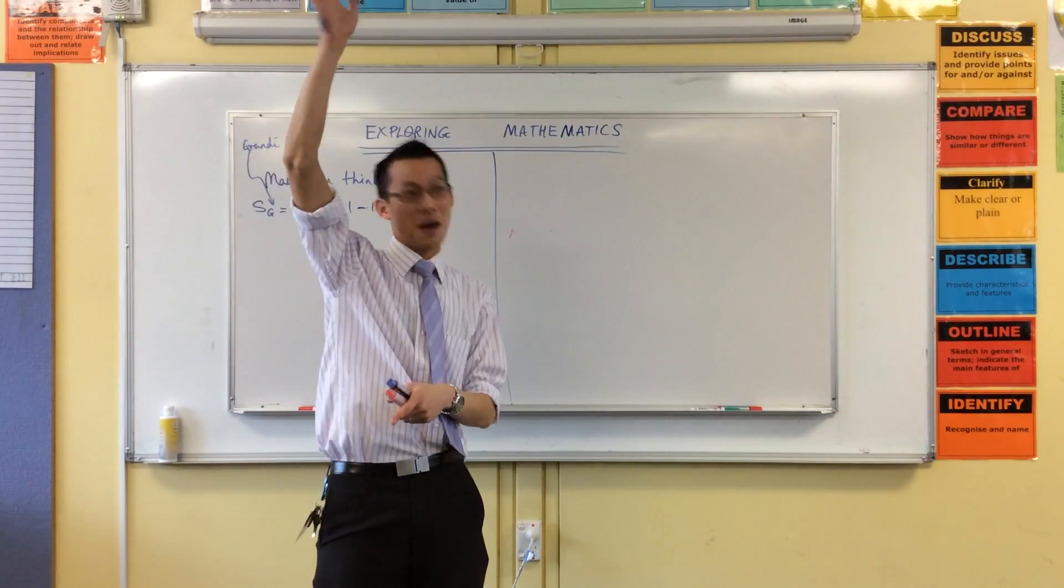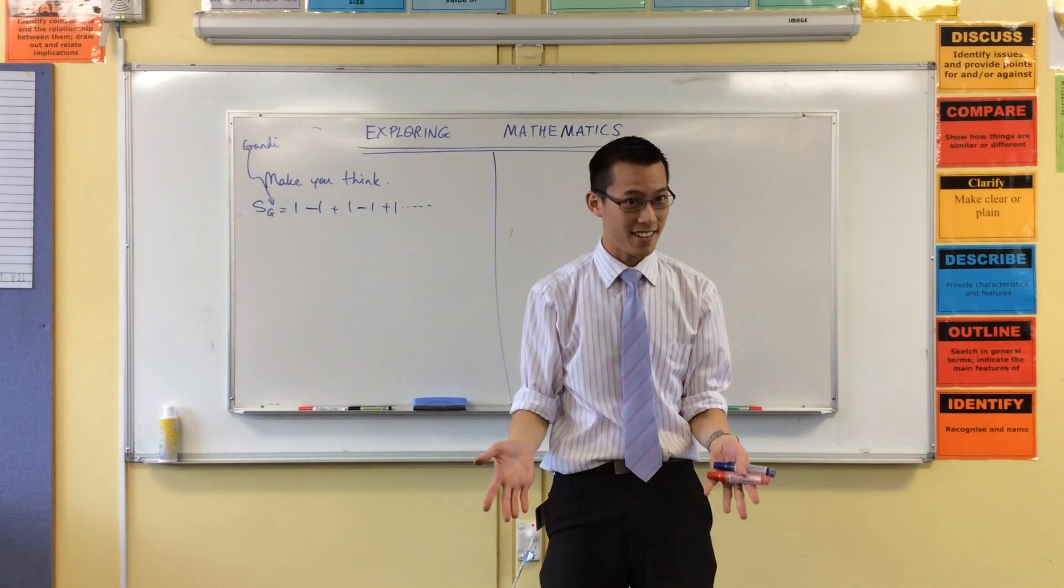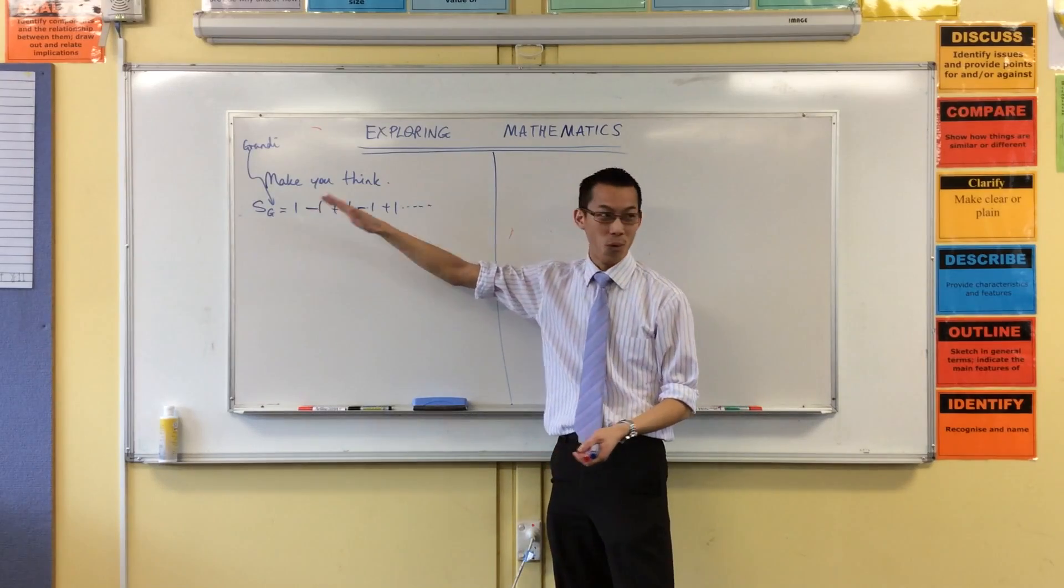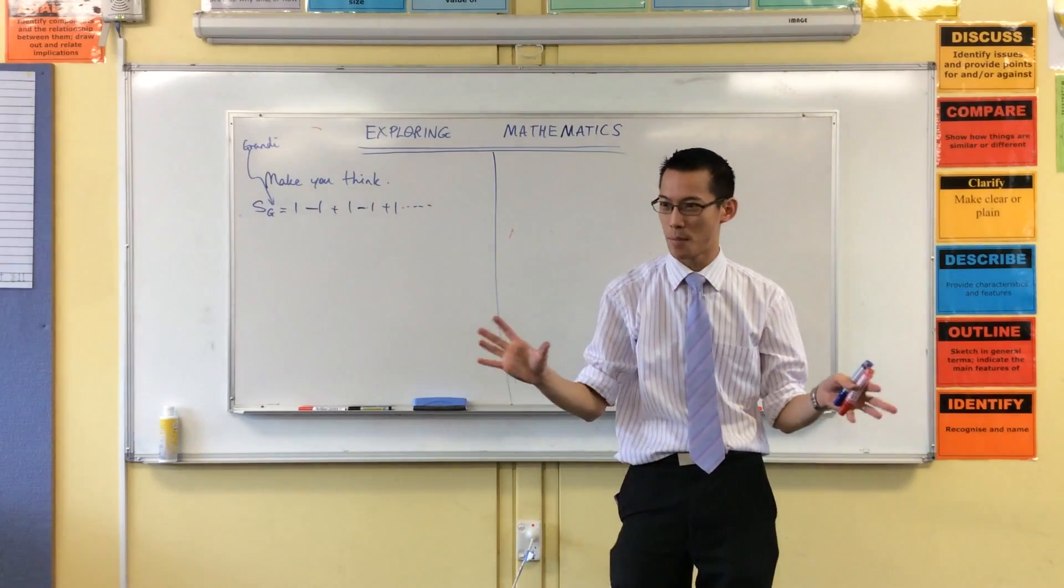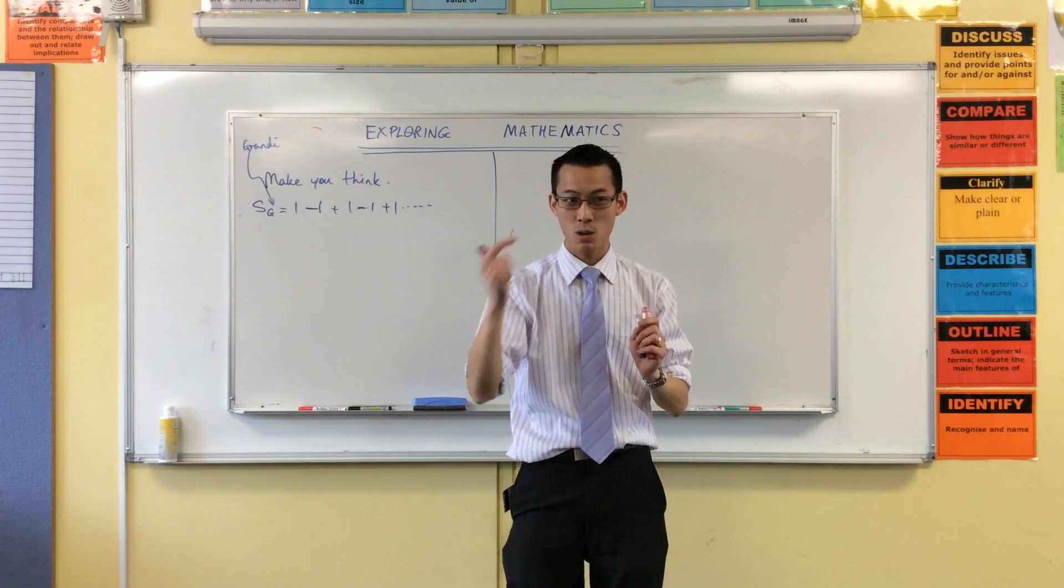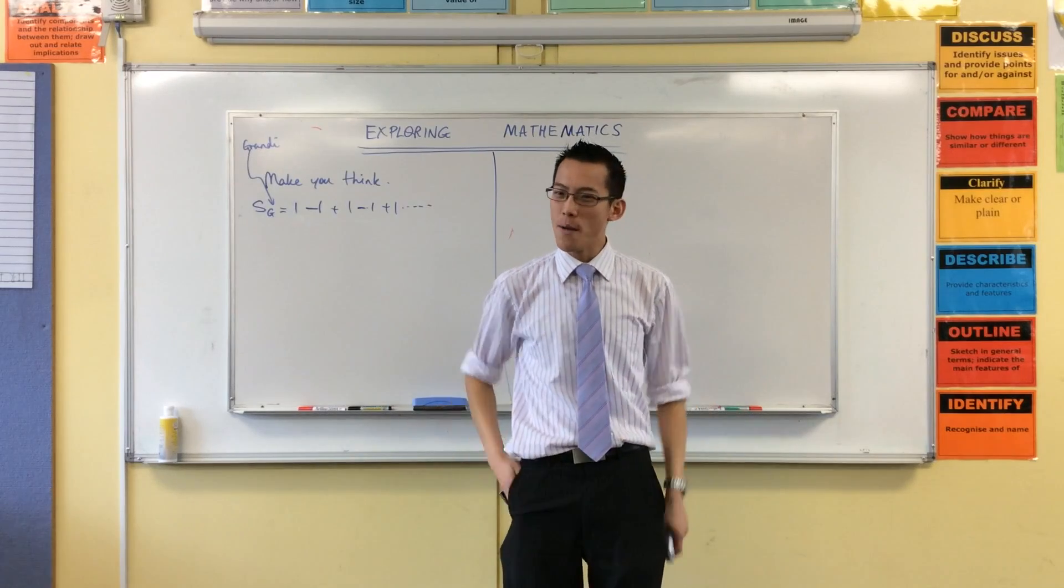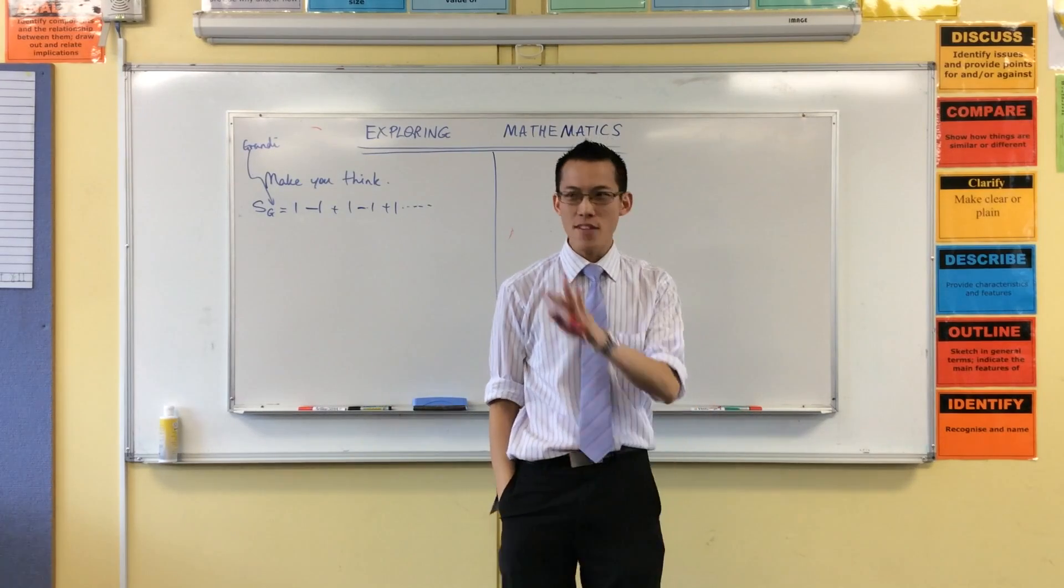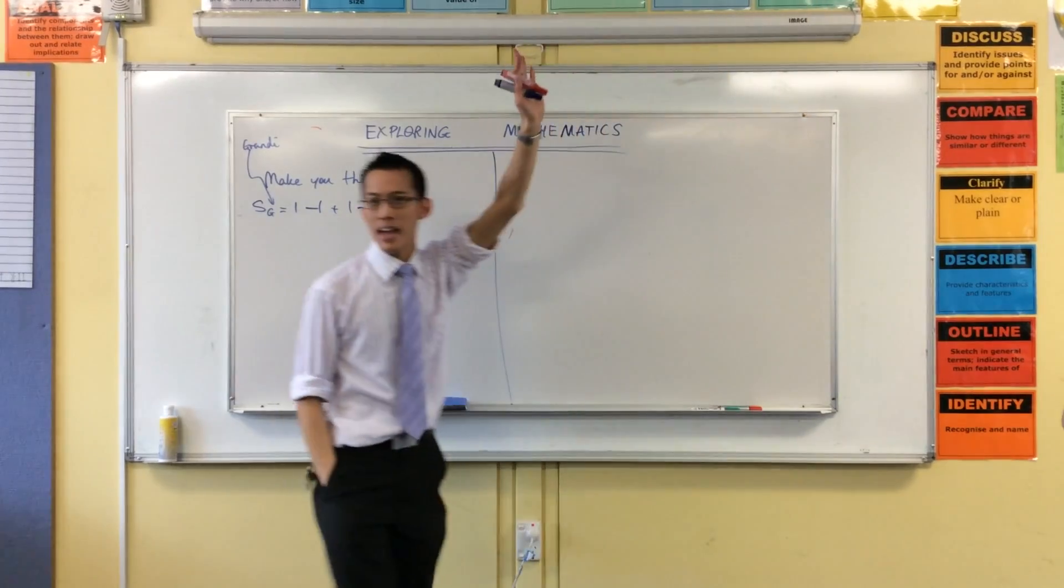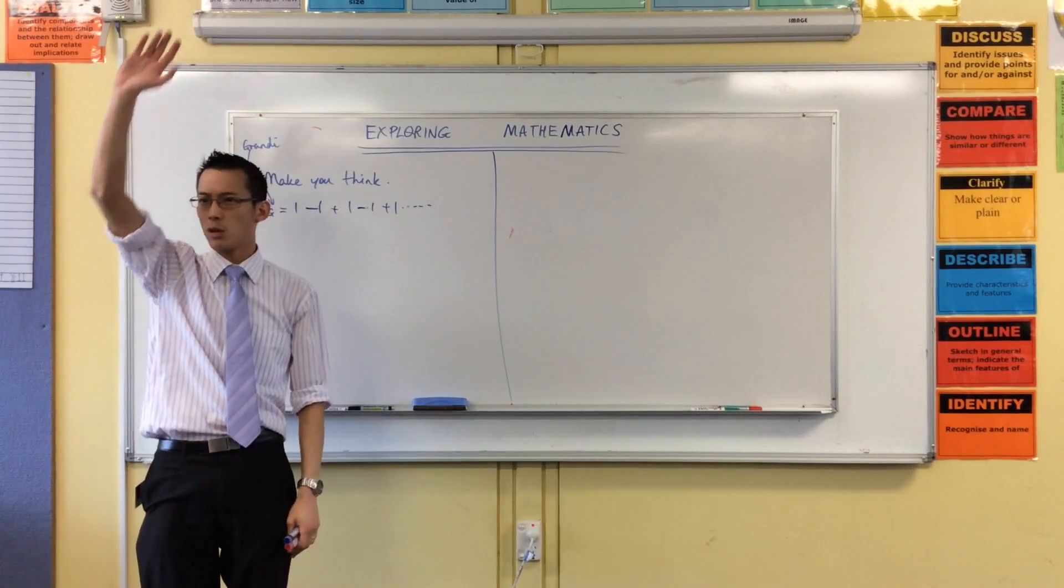So on the count of three I want you to say one or zero. You ready? You thought about it? One, two, three. [Students respond] We're almost 50-50. Now you've actually said something. Hands up for ones, I'm just curious. Good, that is close. Hands down. Hands up for zeros now. Okay, so it looks like it's sort of split a third to two-thirds.